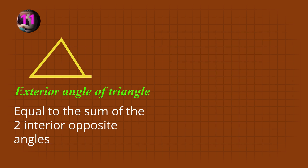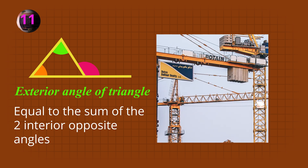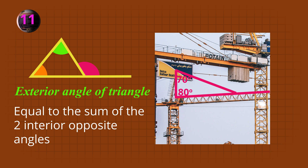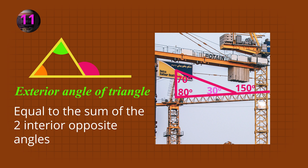The exterior angle of a triangle is the angle outside the triangle that is formed when one side of the triangle is lengthened. The exterior angle is equal to the sum of the two interior angles. Let's look at this example of a crane. The interior opposite angles inside the triangle are 70 degrees and 80 degrees. Because the angles inside the triangle must add up to 180 degrees, the third angle inside the triangle must be 30 degrees. Then because angles on a straight line add to 180 degrees, the exterior angle of this triangle must be 150 degrees. See that 70 plus 80 adds to 150.